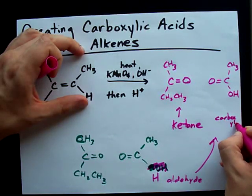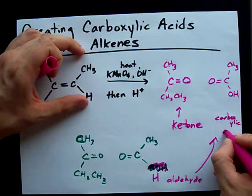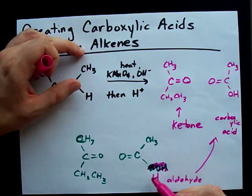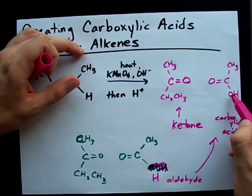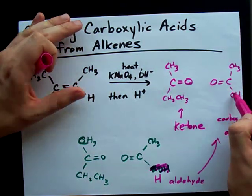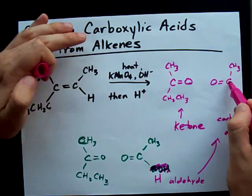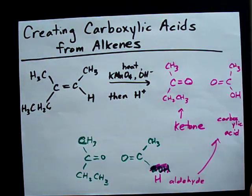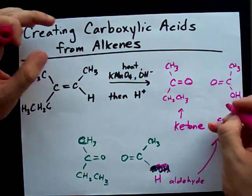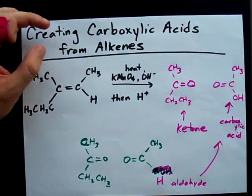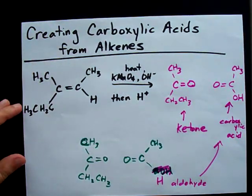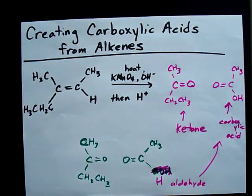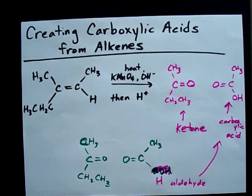Carboxylic acid — notice the H has become OH, so you have a double bonded O and an OH attached to the same C. That's what makes it a carboxylic acid. And that's how you make carboxylic acids out of alkenes. Just make sure you have some bare H's to get oxidized. Best of luck.